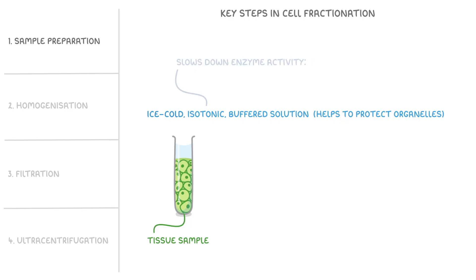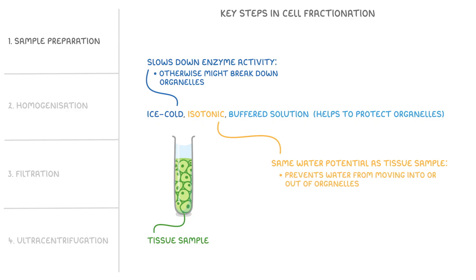It's ice cold to slow down enzyme activity that otherwise might break down the organelles. It's isotonic, which just means it's got the same water potential as the tissue sample in order to prevent water from moving into or out of the organelles and causing damage. And lastly, it's buffered in order to maintain a constant pH and this helps to prevent denaturation of enzymes and other proteins.